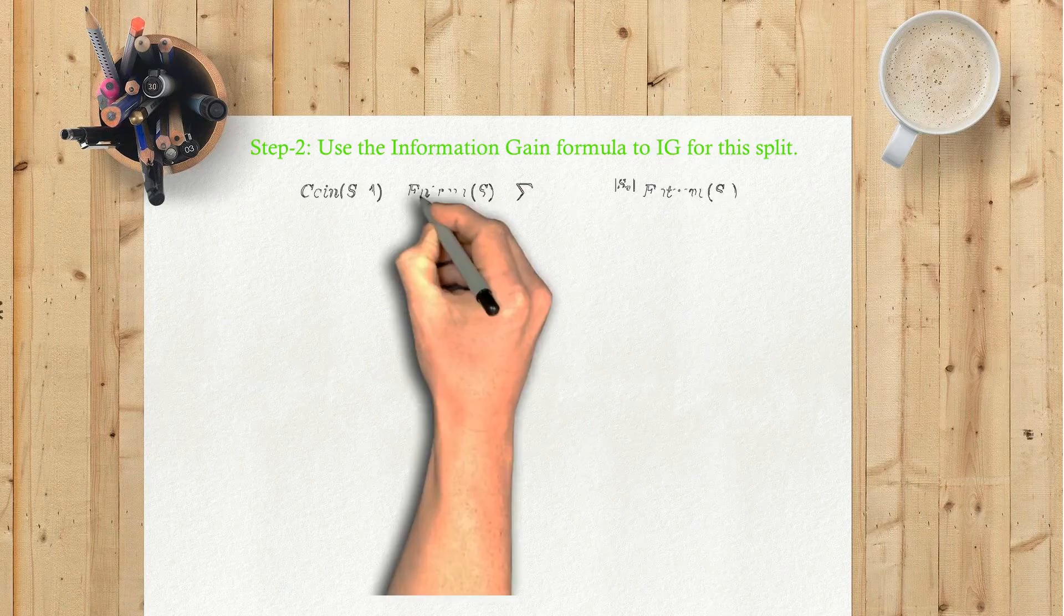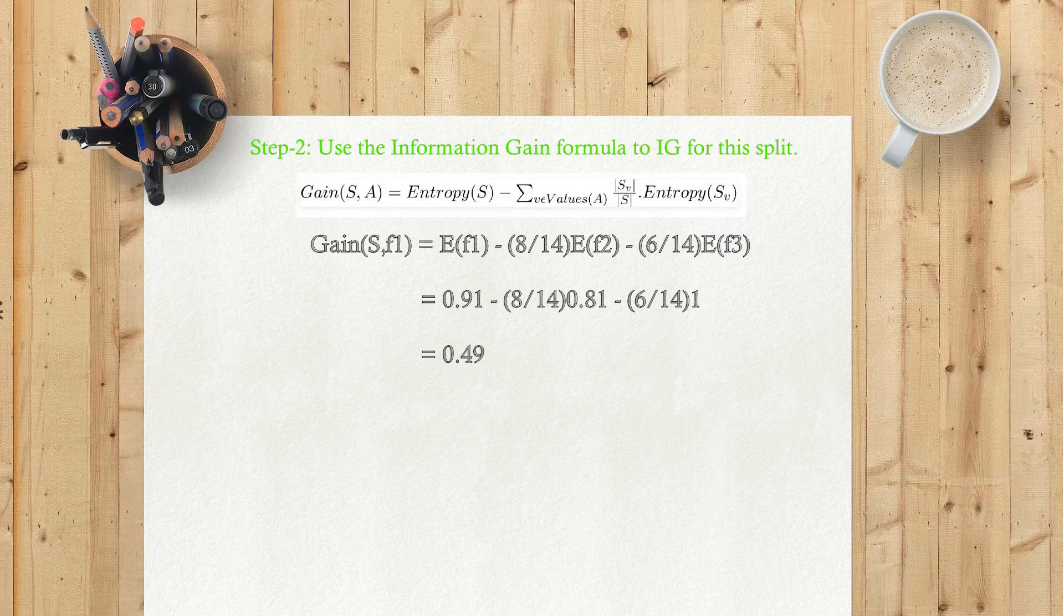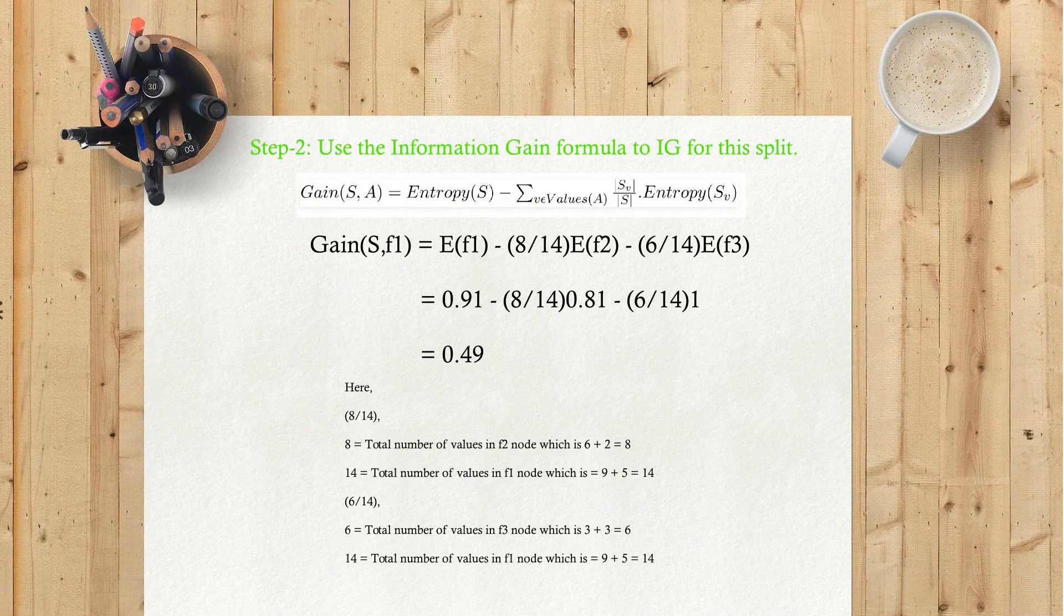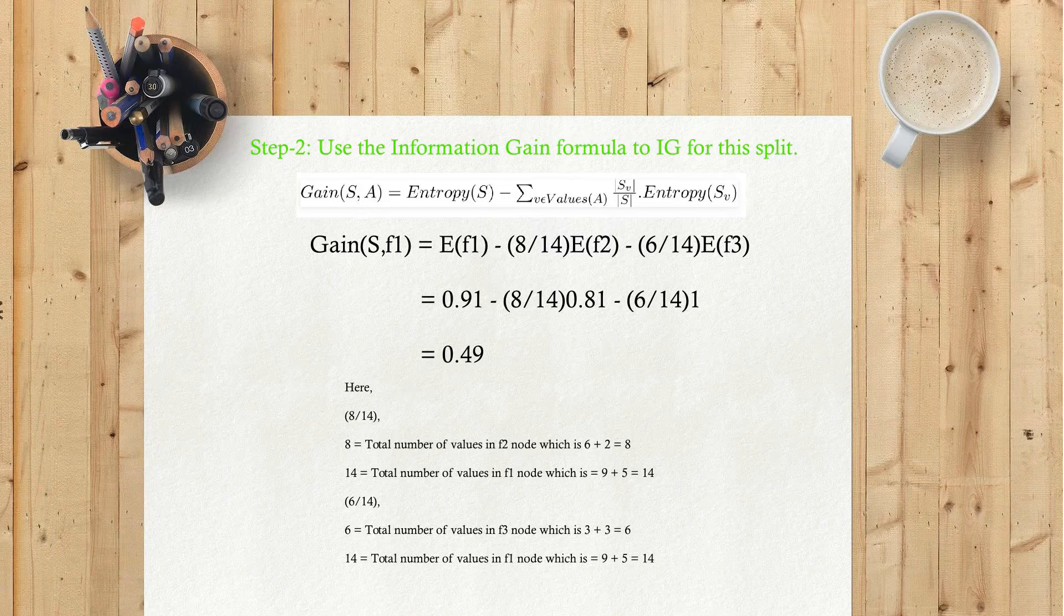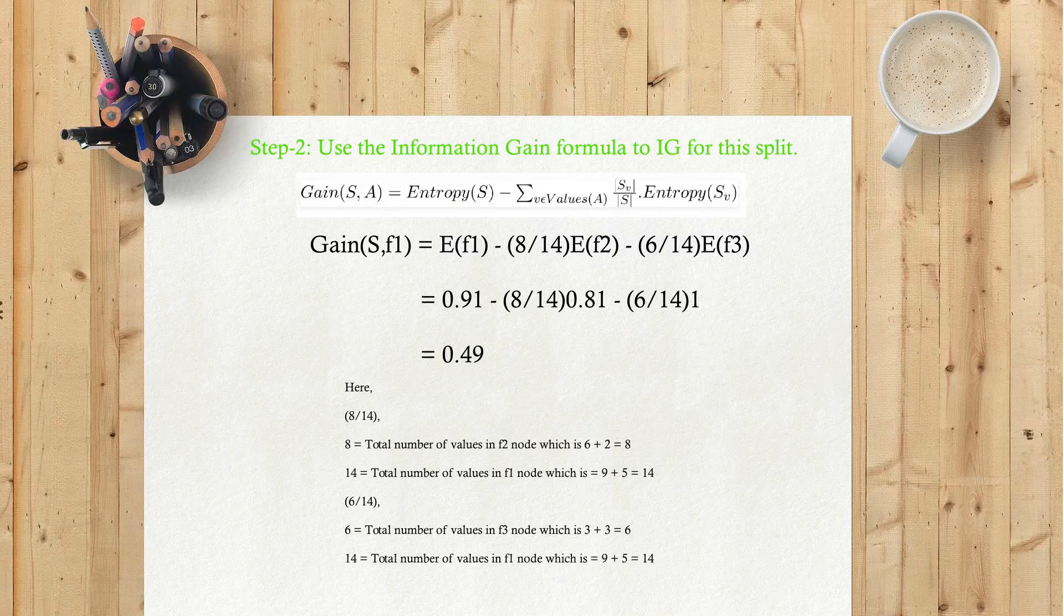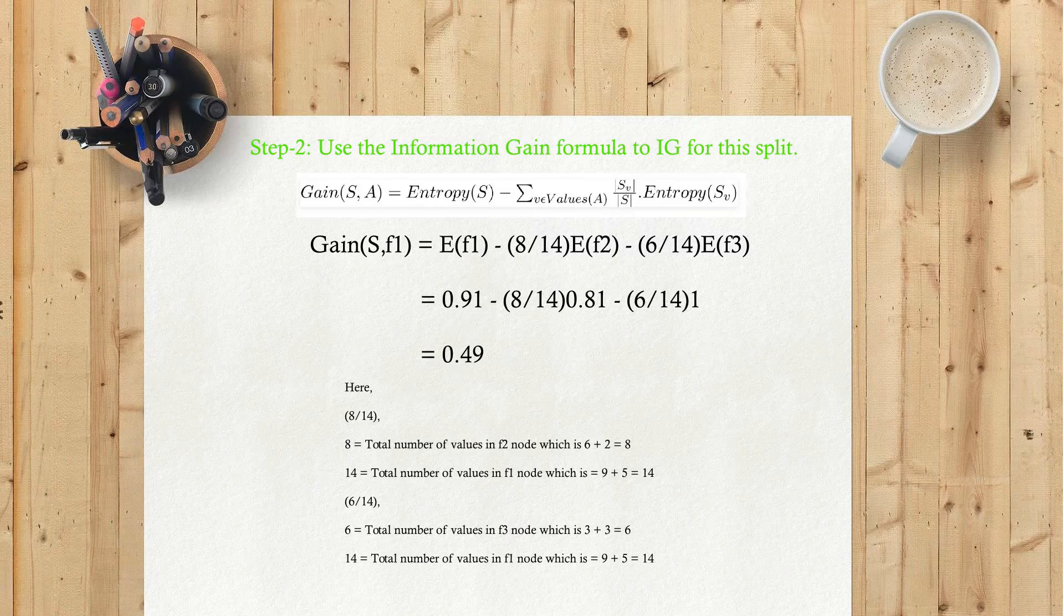Step 2: Use the information gain formula to calculate IG for this split. Gain(S, F1) = E(F1) - (8/14)E(F2) - (6/14)E(F3) = 0.94 - (8/14)(0.81) - (6/14)(1) = 0.49.